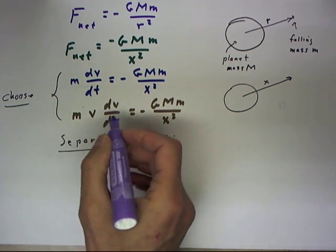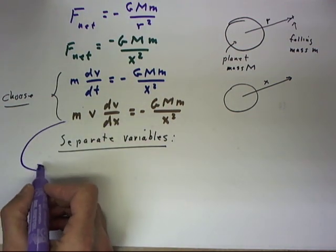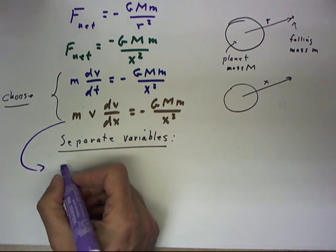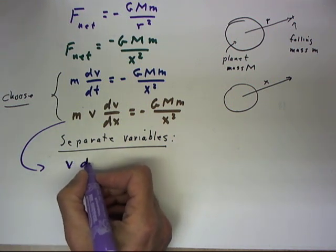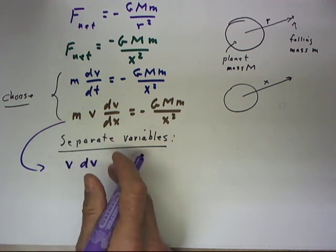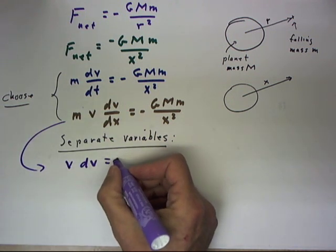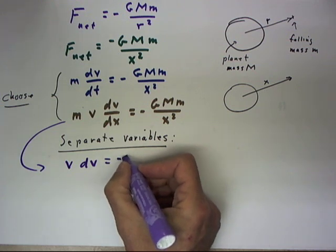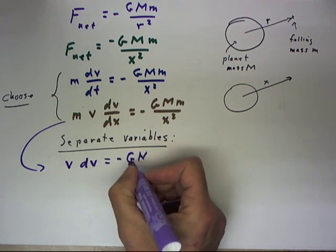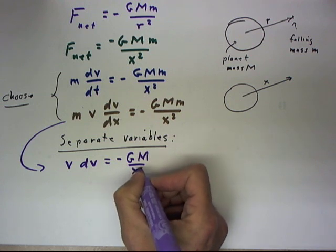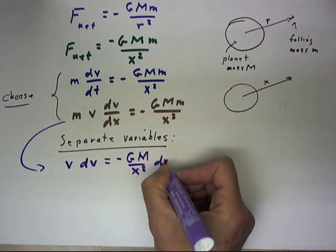Separating the variables in the second form of the equation, we get V dV on the left-hand side. On the right-hand side, we're going to get negative G times M over X squared dX.